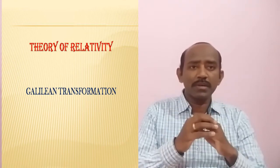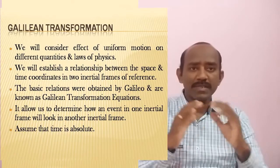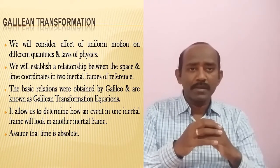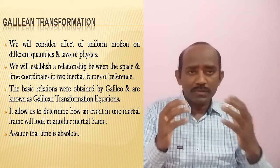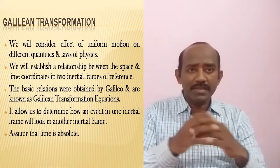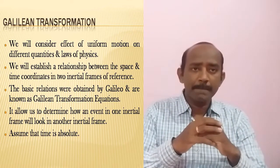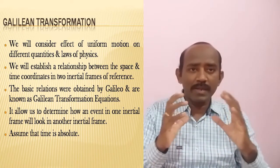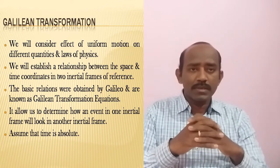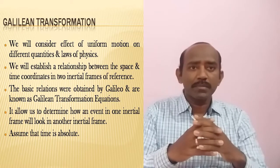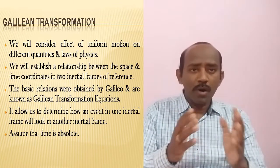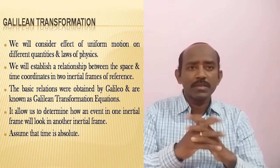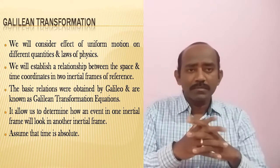In Galilean transformation equations, we are relating some physical quantities such as position, acceleration, velocity, and we are also considering the laws of physics — for example, the law of conservation of linear momentum and the law of conservation of energy. So what happens in the case of Galilean transformation equations? If we are observing the event from two frames of reference, how these laws and physical quantities are related to one another — that is what we are deriving now.